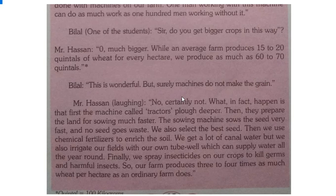Bilal remarked that it is a great achievement. Mr. Hassan then explained the full process: first, a tractor pulls a plough to till the ground. Then a sowing machine plants the seeds. The sowing machine does not waste seeds. Besides that, they use the best quality seeds available.